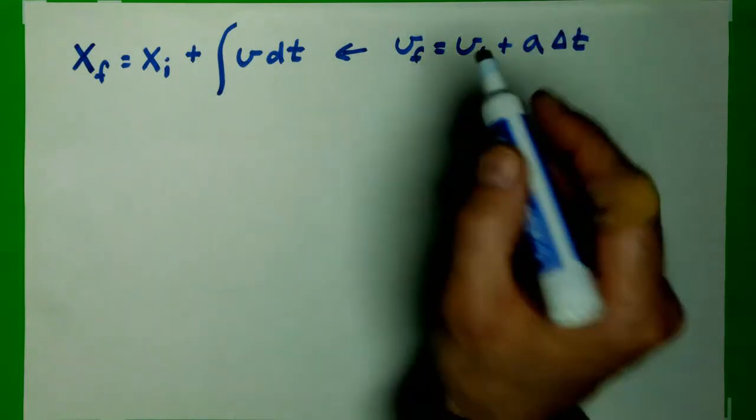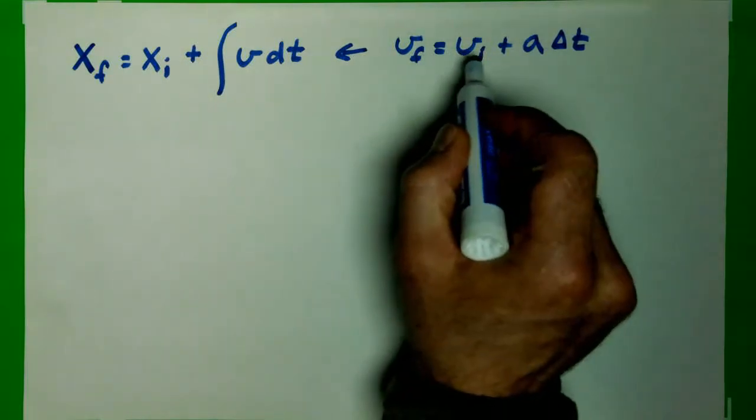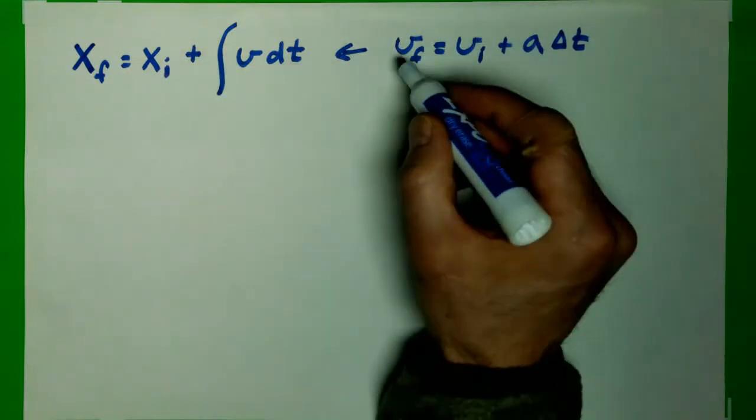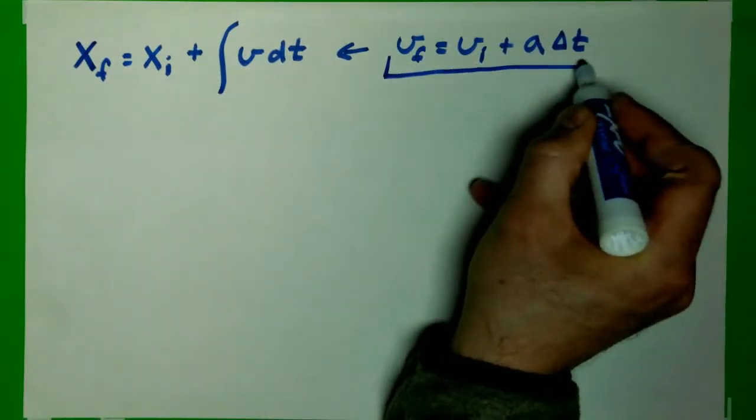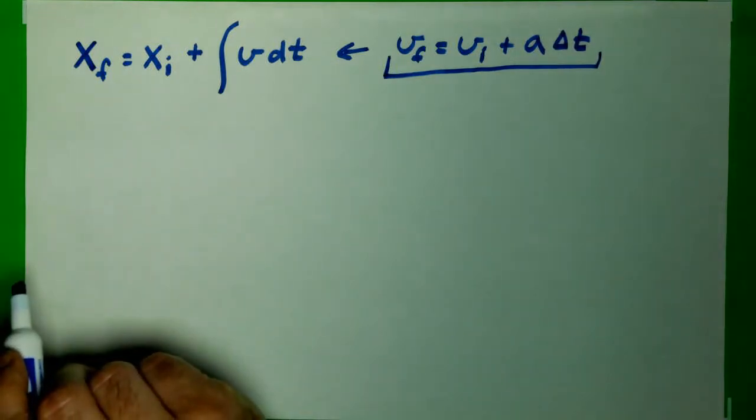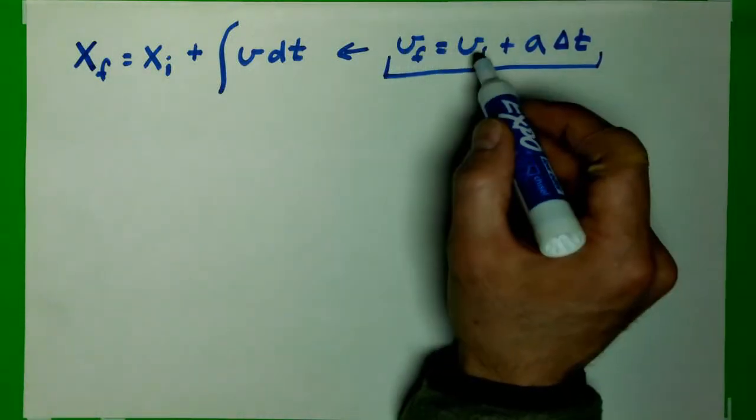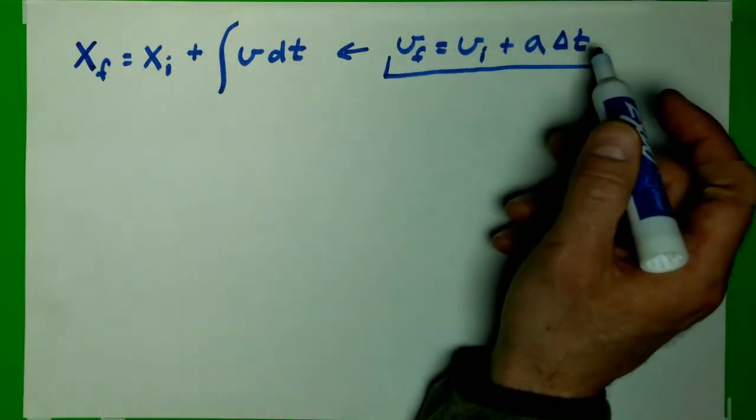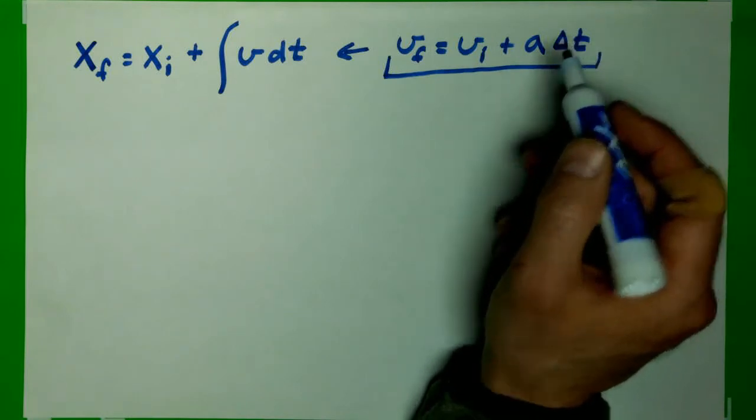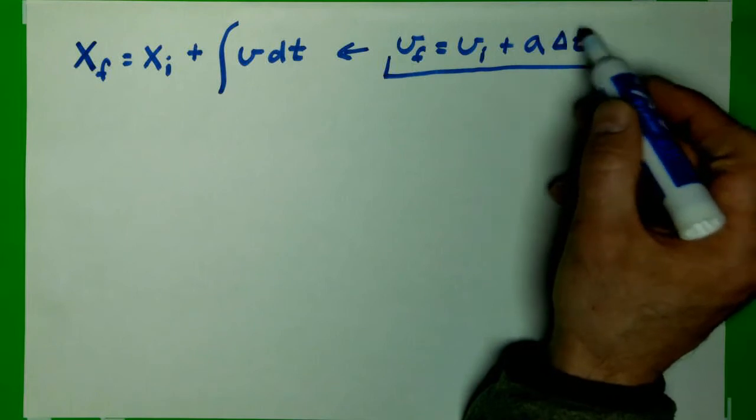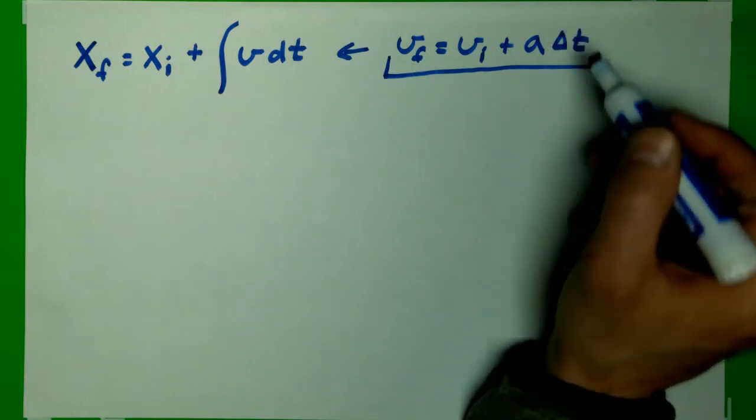So what we want to do is now take this and plug it into here. This of itself is a very useful equation, and in fact the first of what we call our kinematic equations for constant acceleration. It just relates the final velocity to the initial velocity, the acceleration, and the time, the change in time. And often we can choose our initial time to be zero, such that this just becomes time.